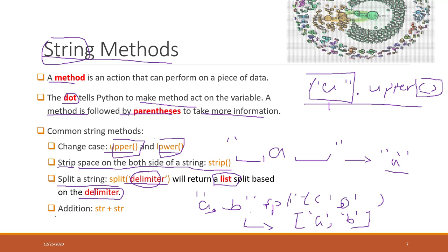We can also use the plus operator for string concatenation. String a plus string b simply creates a new combined string. So 'a' + 'b' gives us 'ab'. Those are the most common methods and operations used with strings.